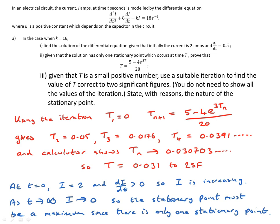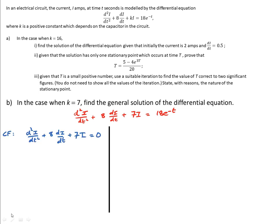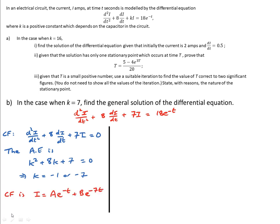Now consider the case when k = 7. We must find the general solution of d²i/dt² + 8di/dt + 7i = 18e^(-t). For the complementary function, the auxiliary equation k² + 8k + 7 = 0 has solutions k = -1 or k = -7. So the complementary function is i = ae^(-t) + be^(-7t).